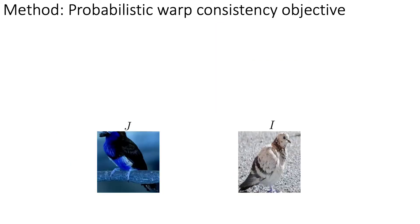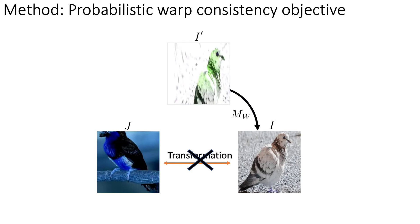We start from a pair of matching images that represent the same object class. The transformation between the pair is unknown during training though. We create a third image i' by generating a synthetic transformation. As a result, the probabilistic mapping relating i' to i is known by construction.